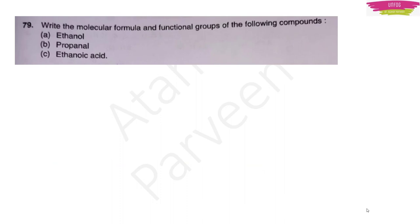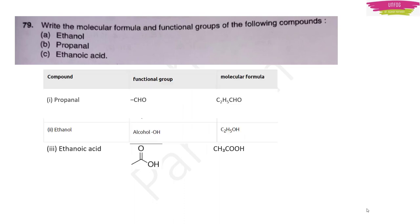Question 79: Write the molecular formula and functional groups of ethanol, propanal, and ethanoic acid. For propanal: functional group is −CHO, molecular formula is C₂H₅CHO. For ethanol: functional group is −OH, molecular formula is C₂H₅OH. For ethanoic acid: functional group is −COOH, molecular formula is CH₃COOH.